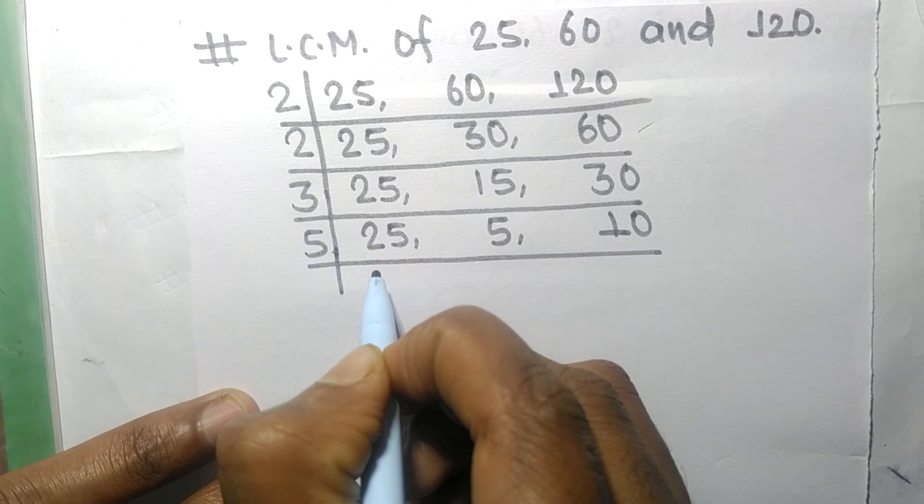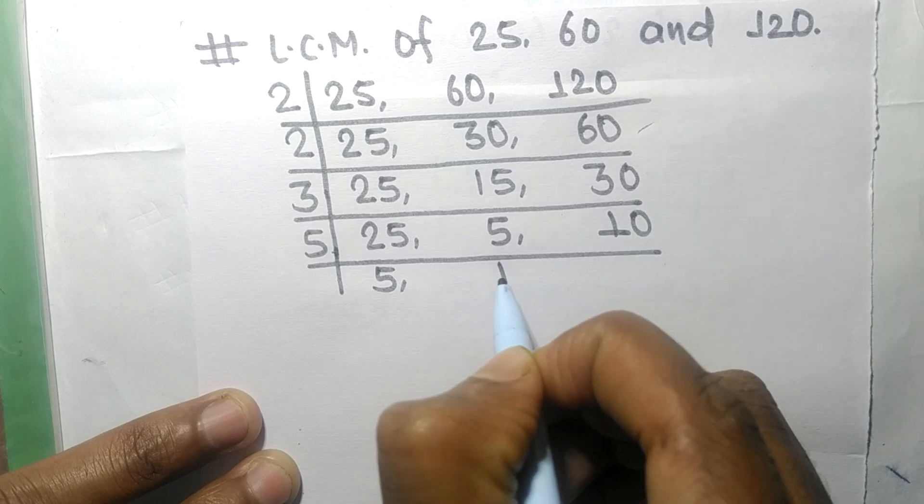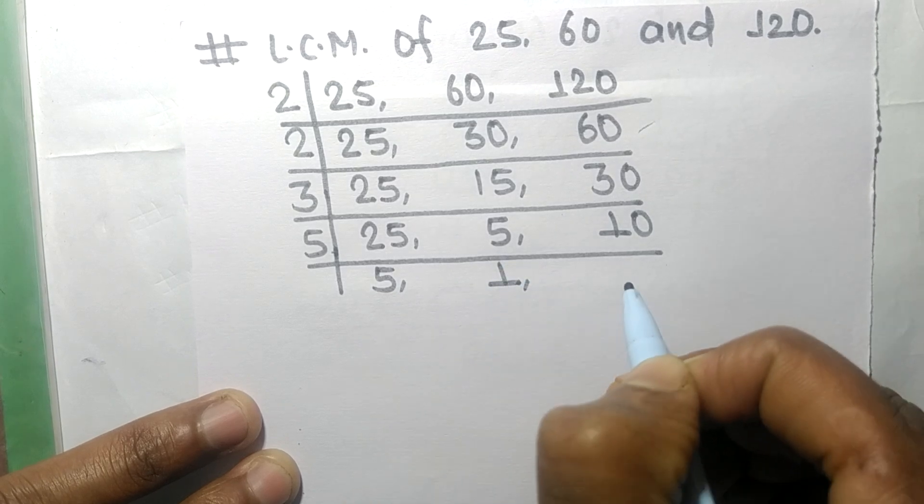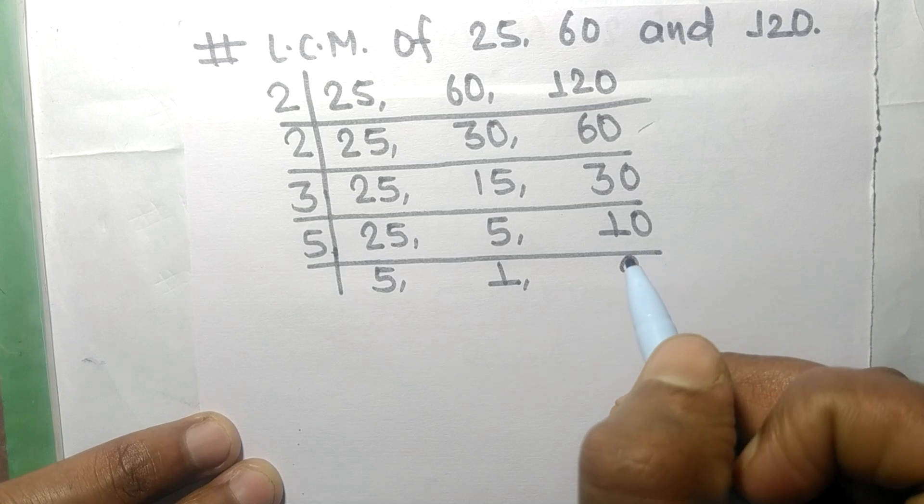5 times 5 means 25, 5 times 1 means 5, 5 times 2 means 10. So now the numbers 5, 1 and 2 are not exactly divisible by any other number.